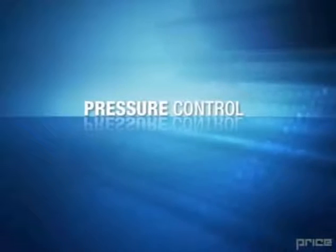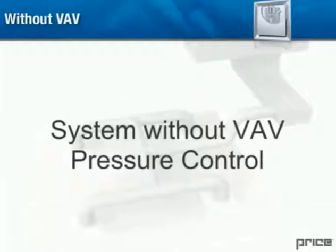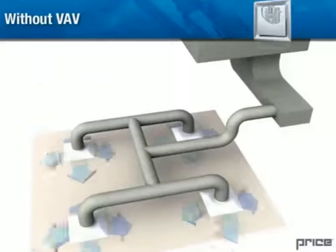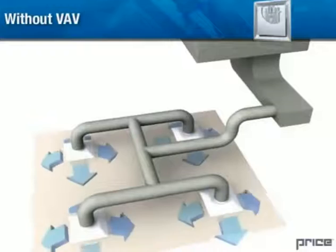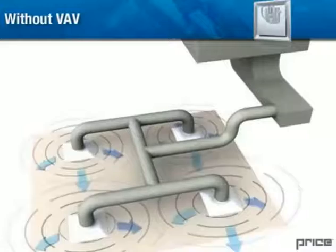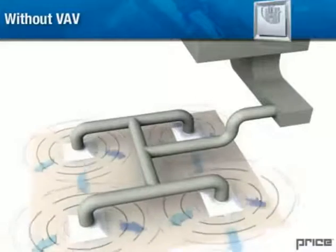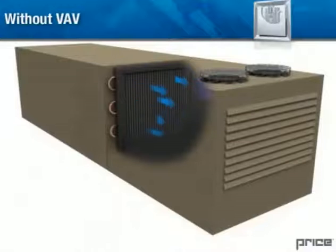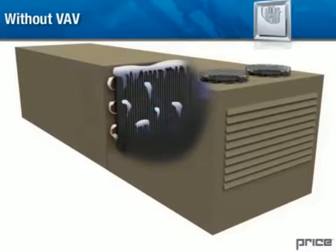Pressure control: System without VAV pressure control. It is important to control the system pressure for two main reasons. The first is to maintain design noise levels. If the pressure in the duct work exceeds the design, the noise levels of the diffuser will increase beyond the design conditions when they throttle the air based on room load. The second reason is to prevent the DX coil on a rooftop unit from freezing over.